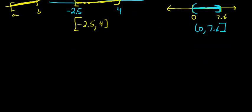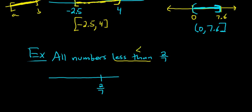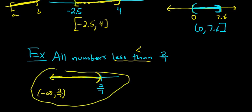Let's do a couple more that are a little different. What if it's expressed in words? For example: all numbers less than 2 sevenths. Draw the picture, mark 2 sevenths, and since it specifically says less than, we don't include 2 sevenths. So it's all the numbers less than that. Reading left to right: negative infinity to 2 sevenths with a parenthesis, since we don't include it.